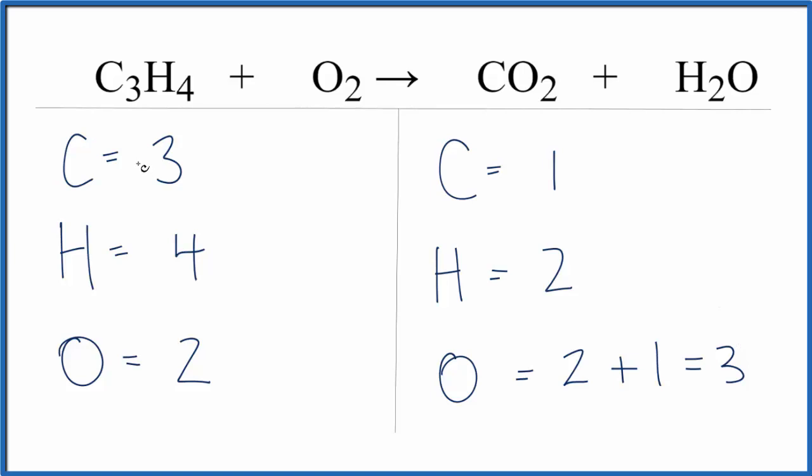Let's fix our carbons first. We have three on the reactant side, one on the product. So we'll put a three in front of the CO2, so one times three. That'll give us three carbons, and then this three applies to the whole CO2 molecule here. So we have two times three, six, plus the one. So we have a total of seven now.